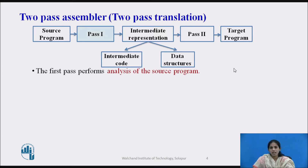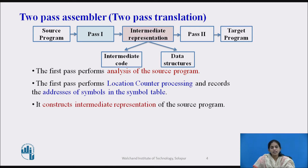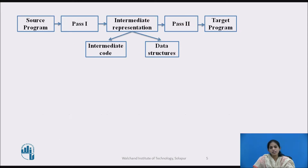Now we will see exactly what pass one performs. The first pass performs the analysis of your source program. After analyzing, it performs location counter processing and records the addresses of the symbols in the symbol table — that is, during pass one it builds the symbol table. After that, it generates the intermediate representation of the source program, consisting of two components: intermediate code and data structure.